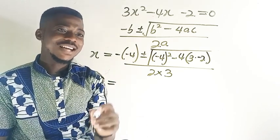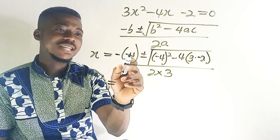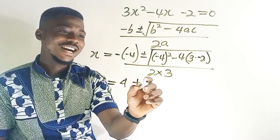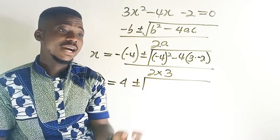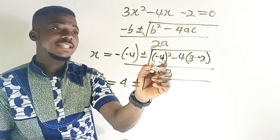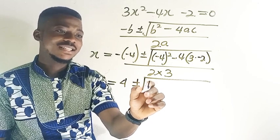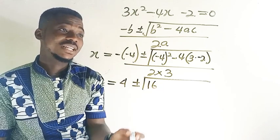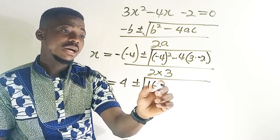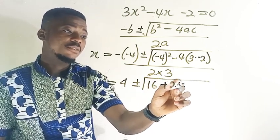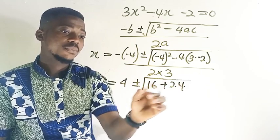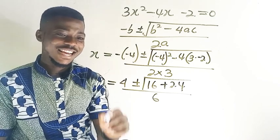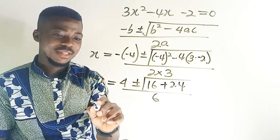So x is equal to now minus times minus 4 will give you 4 plus or minus, then we'll bring our bracket. Minus 4 exponent 2 will give us 16 minus 4 times 3 times negative 2 will give you what? That's 4 times 3. So positive 24, so plus 24 all over 2 times 3 will give us 6. So this is x.